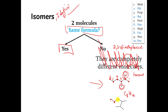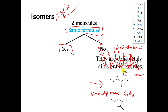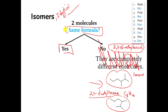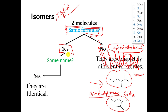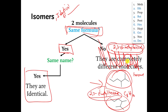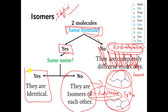We play the same game for the bottom molecule. The longest chain of carbons is also 6, so the name also ends in hexane. Numbering the carbons this way, there is a methyl and another methyl — so it is dimethyl. The methyls are at carbon 2 and carbon 3, so that molecule's name is also 2,3-dimethylhexane. Both molecules have the same formula and the same name, so these two molecules are identical to each other.